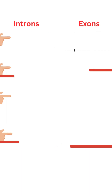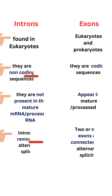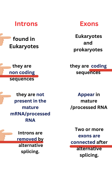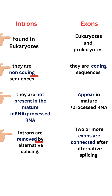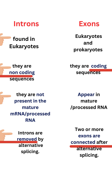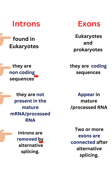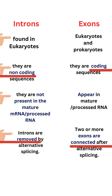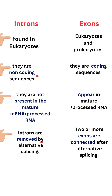Introns are found in eukaryotes only. Exons are found in both eukaryotes as well as prokaryotes. Introns are the non-coding sequences, whereas exons are the coding sequences.